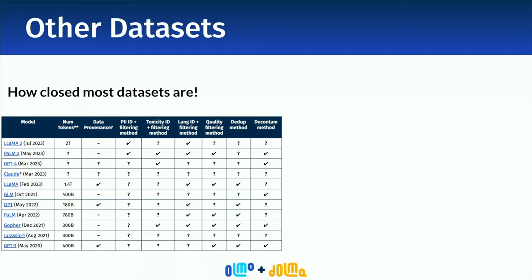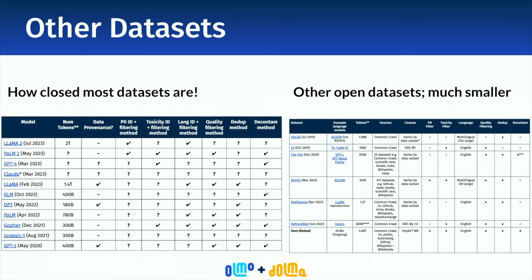How does this dataset compare with others in the literature? When looking at datasets that closed large language models are trained on, there are too many question marks — we basically have no information about how these data look or even how many tokens these language models are trained on. In comparison with other open datasets used for pre-training, our data is much larger. The previous largest open dataset was almost one trillion tokens.